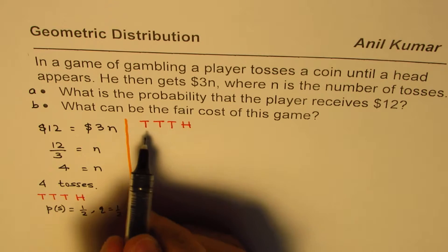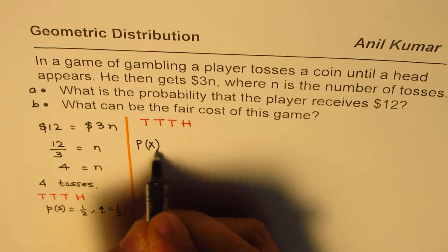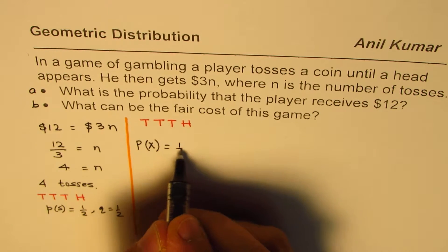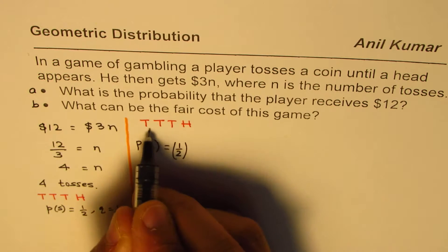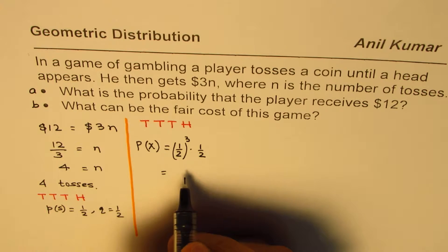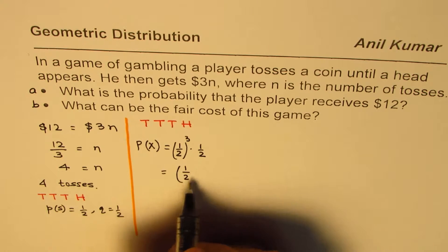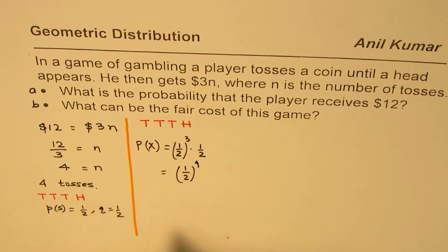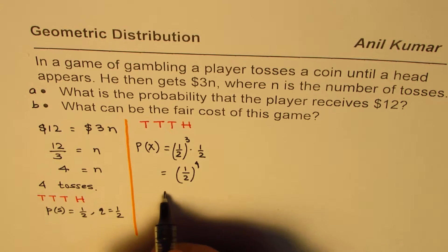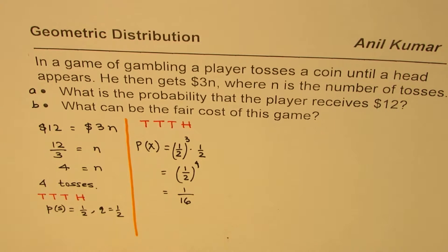What is the probability? The probability in this case is 1/2 to the power of 3 times 1/2, or 1 over 2 to the power of 4. So that is the probability in this particular case, which is 1 over 16.